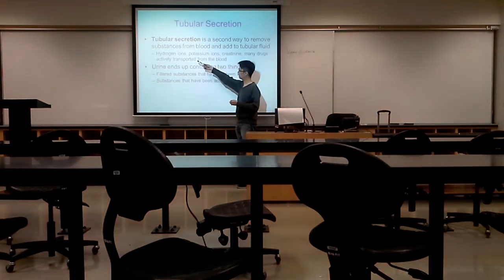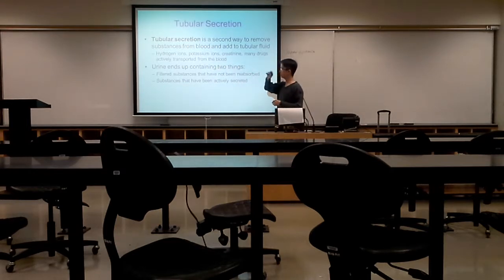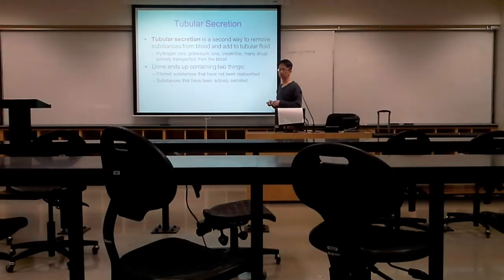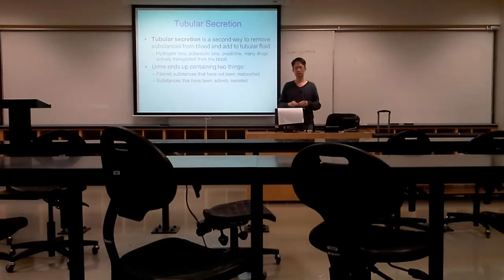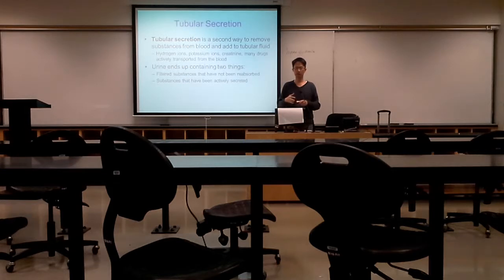Substances secreted include hydrogen ions, which make your blood acidic, and potassium ions. We want to keep extracellular fluid high in sodium but low in potassium. We also secrete creatinine and many drugs. Drugs are a major thing we want to get rid of — not just medications but also substances like alcohol, beer, and wine.